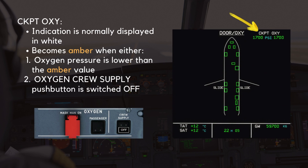First off is the cockpit oxygen indication at the top of the page. This indication is normally displayed in white. It becomes amber when either the oxygen pressure is lower than the amber value, or when the oxygen crew supply push button is switched off.